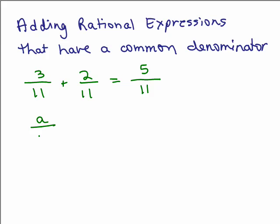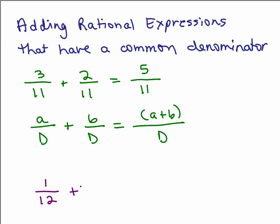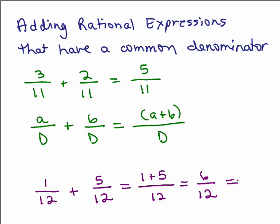In general, if you have a over d plus b over d, you add the numerators and place them all over d, then simplify if you can. For example, 1 twelfth plus 5 twelfths: since the denominators are the same, add 1 plus 5 to get 6 twelfths, then reduce. 6 goes into both, so dividing top and bottom by 6 gives 1 half.